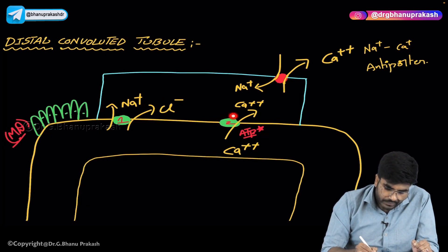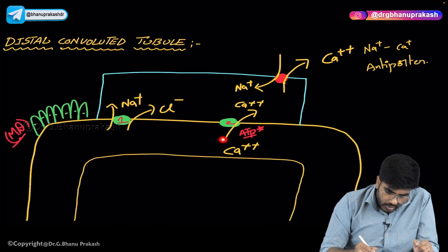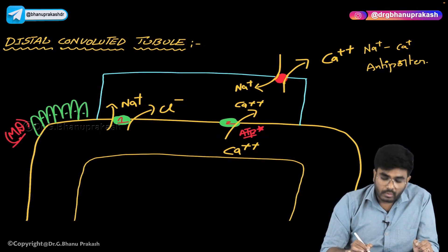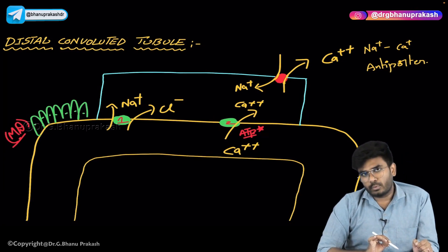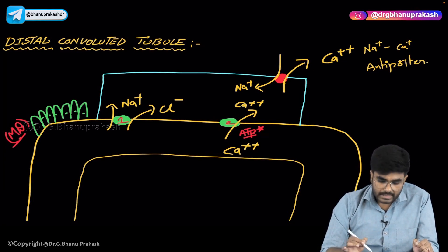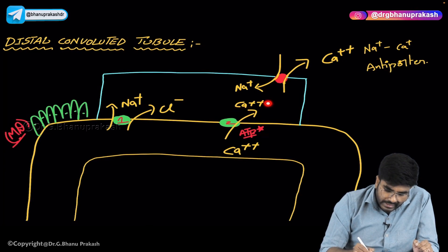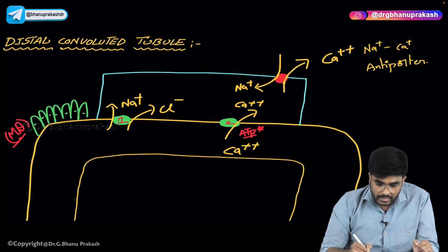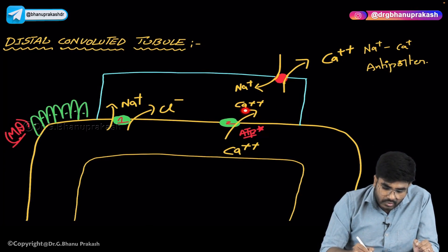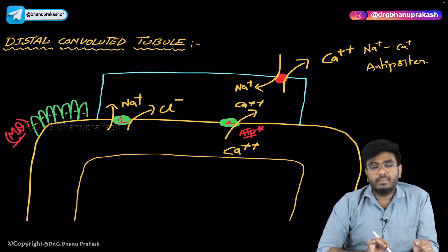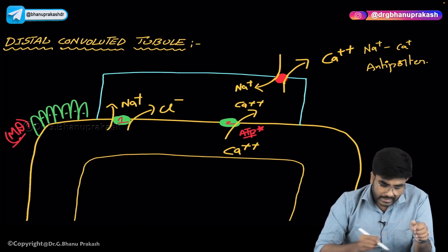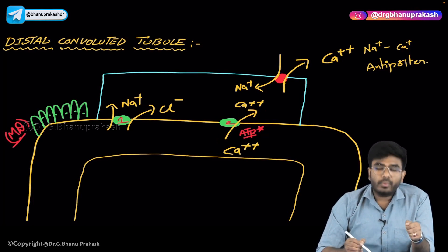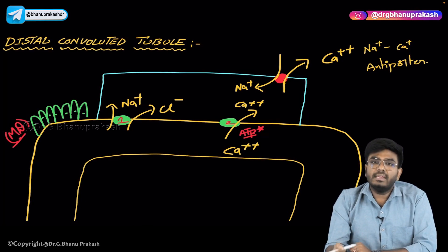The second type of transporter is reabsorbing calcium — this is a calcium-reabsorbing transporter. This calcium reabsorption is totally ATP-dependent. By using ATP, which is an active process, the calcium is being reabsorbed from the urinary ultrafiltrate.